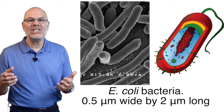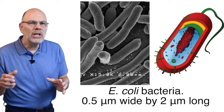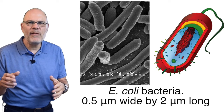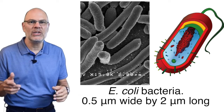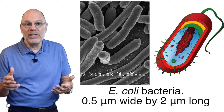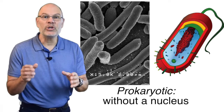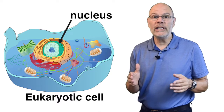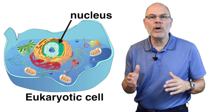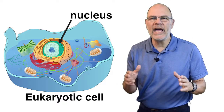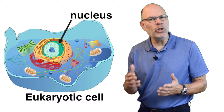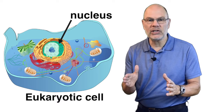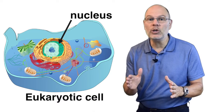Bacteria are among the smallest, simplest cells. The image on the left is a picture taken with a scanning electron microscope of E. coli, a type of bacteria that lives in our guts by the billions. The diagram on the right represents a similar type of cell. Bacterial cells are prokaryotic, which roughly means without a nucleus. A nucleus is a membrane-bound structure that, in certain types of cells, holds and protects the cell's DNA. A nucleus is found in the other kind of cell, the ones that we have. These are eukaryotic cells. Eukaryotic roughly means with a nucleus.